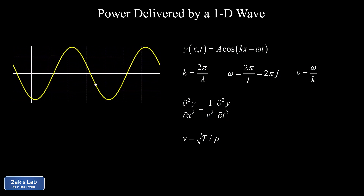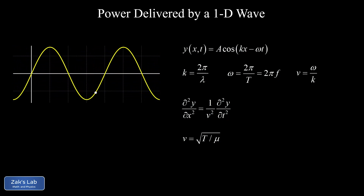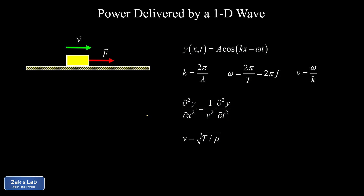We need one more prior result: a formula for the power delivered by a force. Consider a simple cart moving with horizontal velocity v to the right, with a force F applied in the same direction. In a small time dt, the cart slides through distance dx, and work dw is done on it. The incremental work done is dw = F dx — this is really a dot product, but since force and displacement are aligned, we just get the product of their magnitudes.